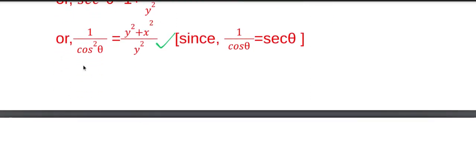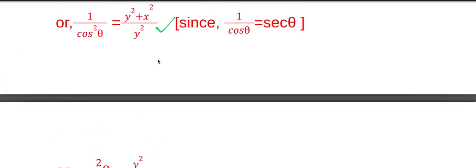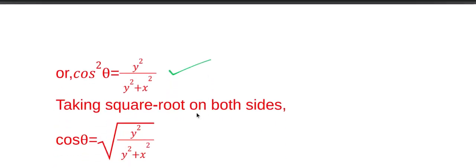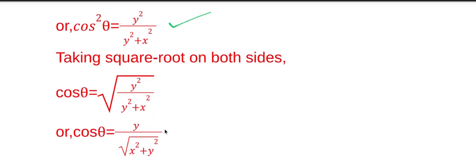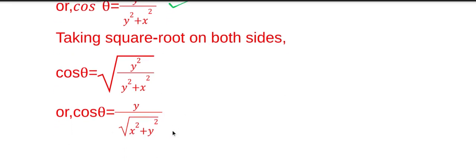Taking inverse on both sides, cos square theta equals y square by y square plus x square. Now taking square root on both sides, cos theta equals root over y square by y square plus x square, which simplifies to y by root over x square plus y square.